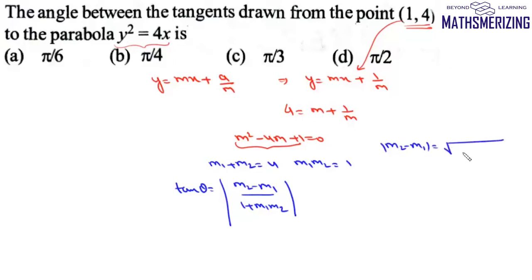So m2 minus m1 is under root of m1 plus m2 whole square and then minus 4 m1 m2. So this will be 16 minus 4 which is 12 which is 2 root 3.